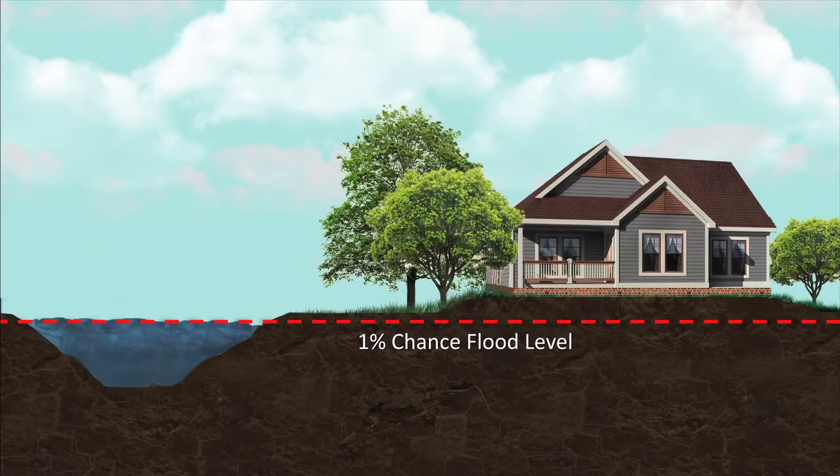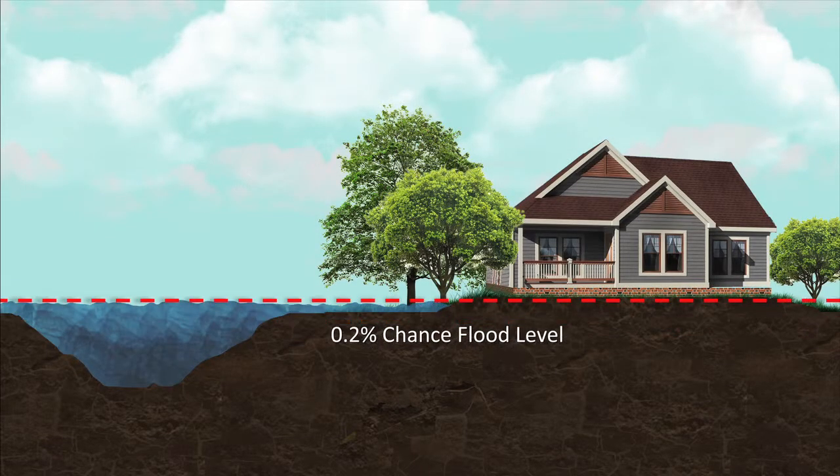Regulating development to protect from the 0.2% chance flood is an effective way to reduce future losses and may also account for changes in the community's risk resulting from potential future climate variability.